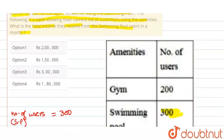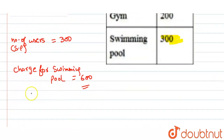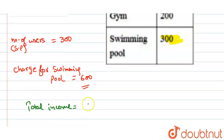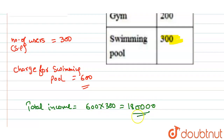Humye kya find out karna hai? Ke income kitni ho gi. So, total income kitni ho gi? Total income equals to 600 into 300. That is, 1,80,000 rupees.